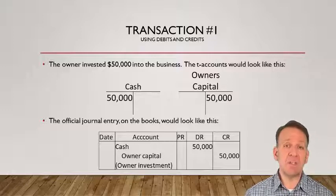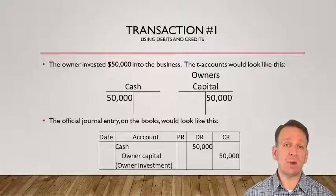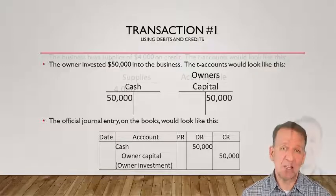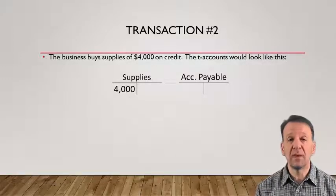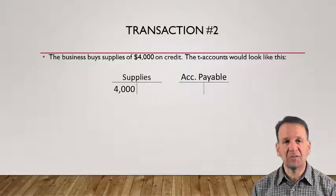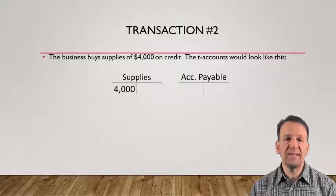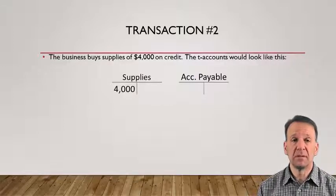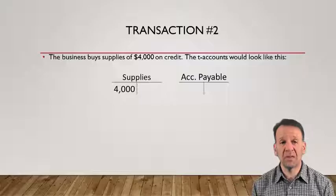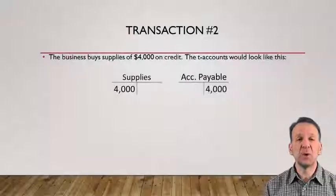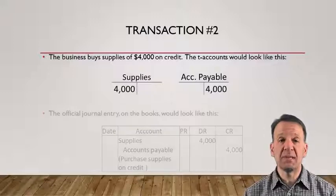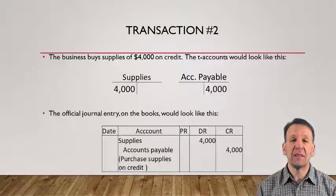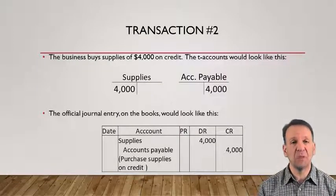The date would be filled in also, and the PR stands for posting reference — we will talk about that in a future video. Transaction two involved buying $4,000 worth of supplies on credit. Supplies are an asset, so we increase it by debiting it $4,000. Accounts payable is a liability, and it increases with a credit. The official journal entry would be a debit to supplies for $4,000 and a credit to accounts payable for $4,000.